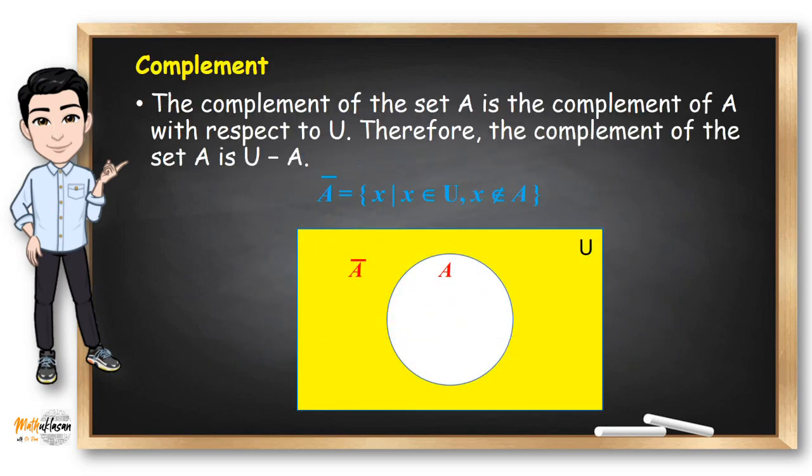Next is the complement of a set. The complement of set A is the complement of A with respect to U. Therefore, the complement of set A is just U minus A — all elements in U that are not in A. In the Venn diagram, the shaded portion is everything outside of set A.